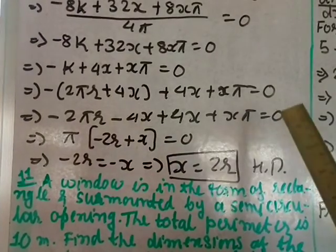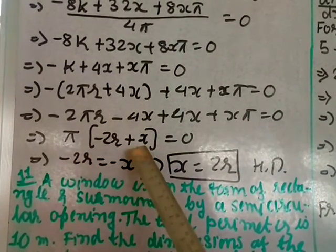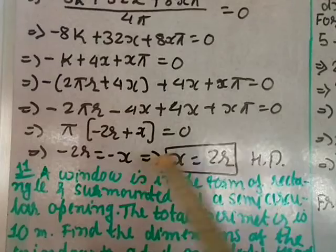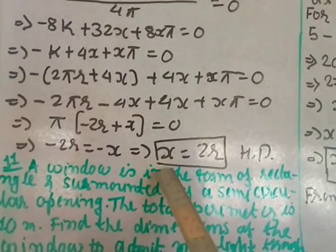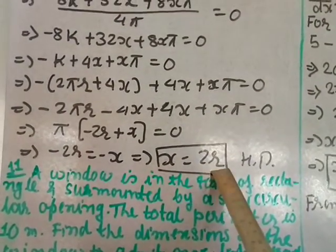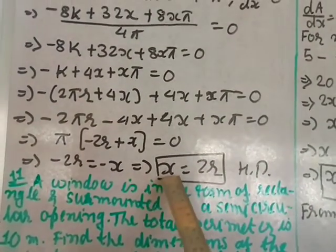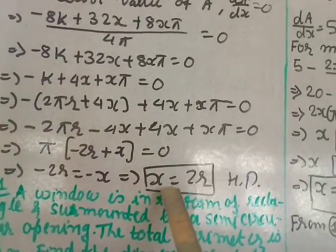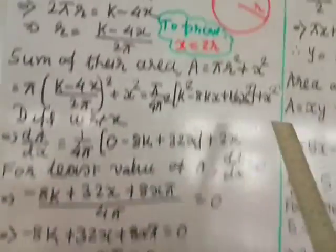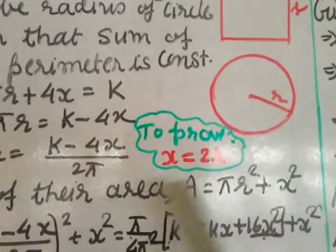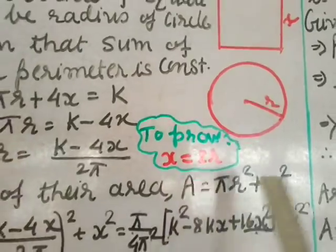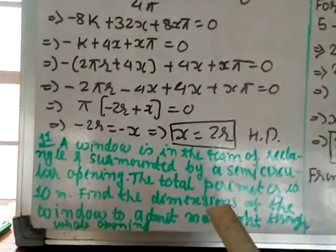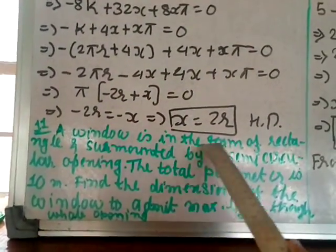Substituting k = 2πr + 4x into the equation: −(2πr + 4x) + 4x + πx = 0. Expanding: −2πr − 4x + 4x + πx = 0. The 4x terms cancel, leaving π(x − 2r) = 0, so x = 2r. This proves that the side of the square is double the radius of the circle.